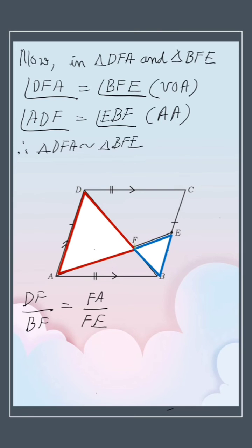But we want the result like this: DF into FE. So cross multiply. Therefore, FD into FE is equal to FB into FA.